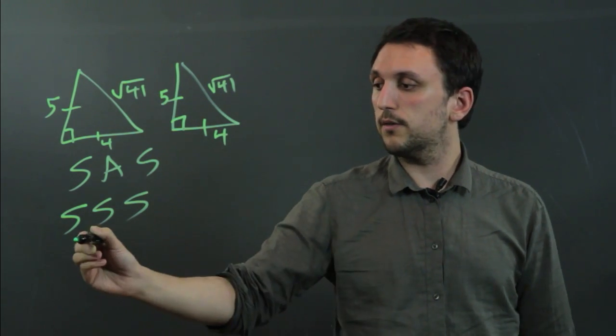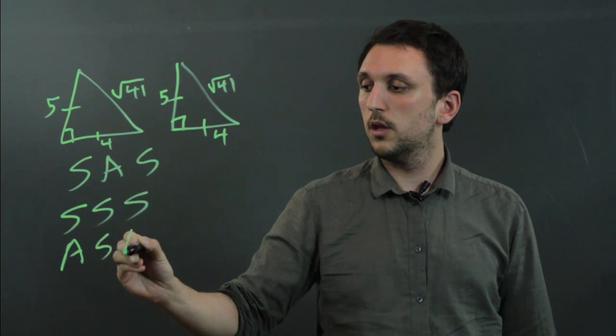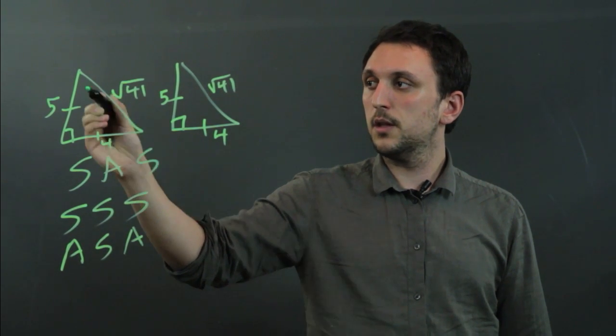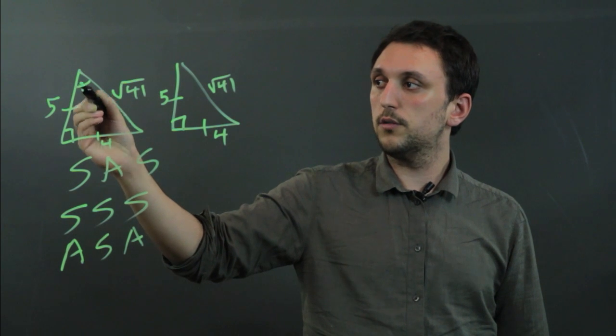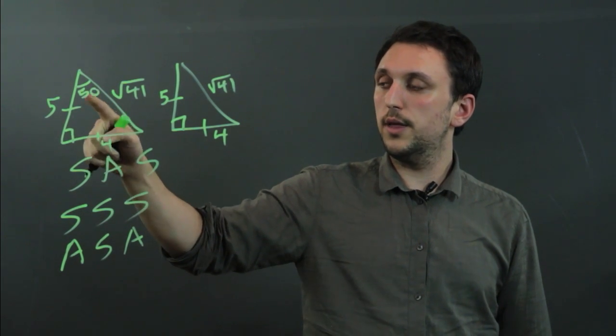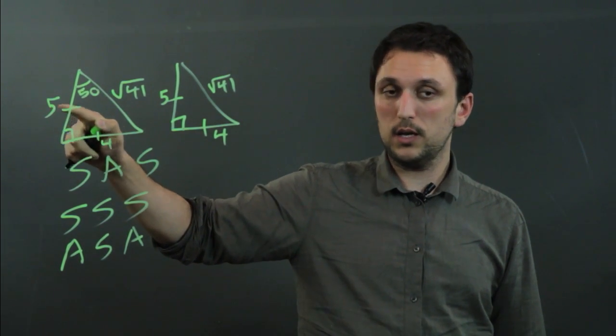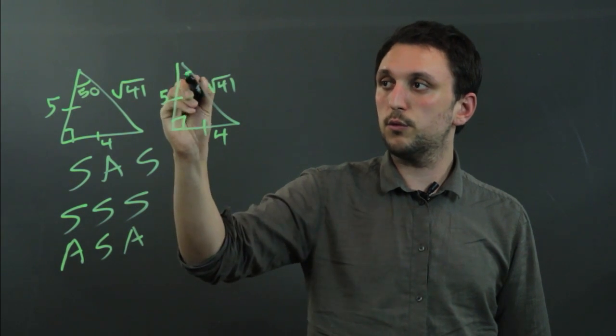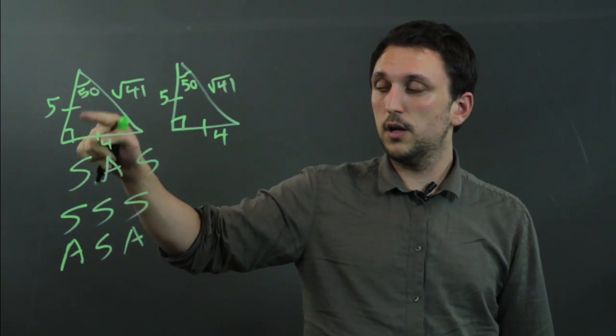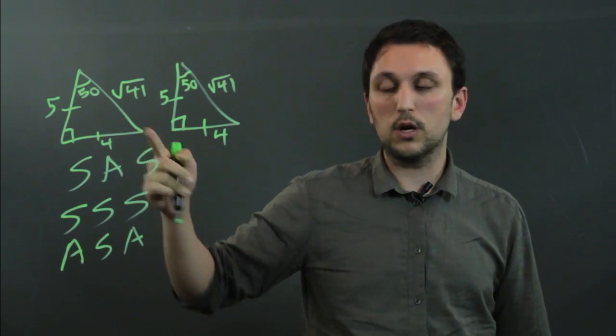Now another one we can do is angle side angle. So if we knew that this was 90 and say this up here was 50, then if we know the side in between, so if this is 90 and this was 50 and this was 5 and this was 5, then we know that the triangles are congruent.